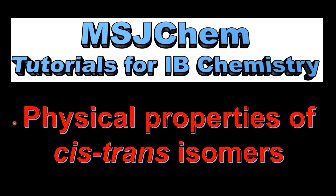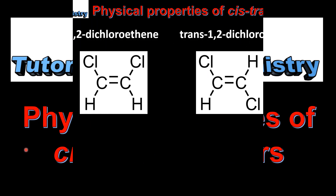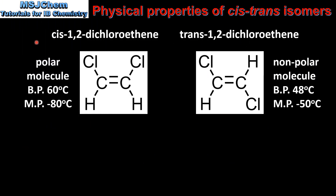This is MSJChem. In this video I'll be looking at the physical properties of cis-trans isomers. In our first example we will compare the boiling point and the melting point of two isomers: cis-1,2-dichloroethene on the left and trans-1,2-dichloroethene on the right.